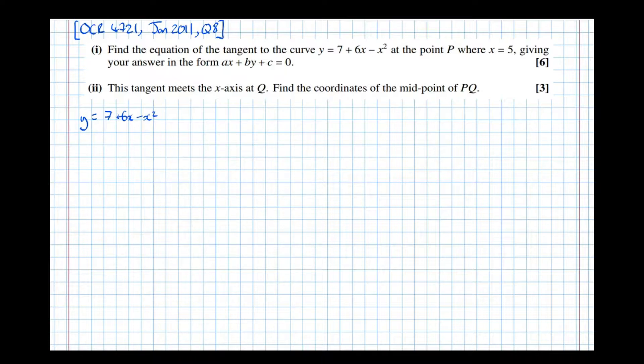Well, the first thing we need is the gradient. So we find dy by dx, the gradient. The 7 differentiates to 0, the 6x to 6, then the x squared to 2x.